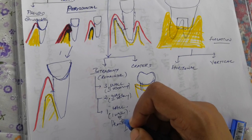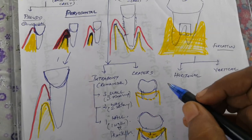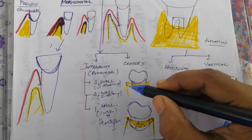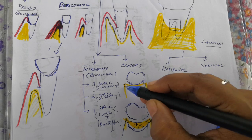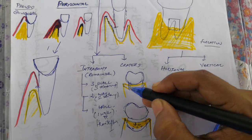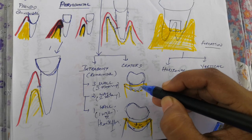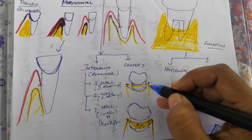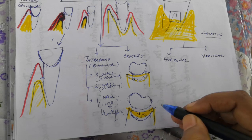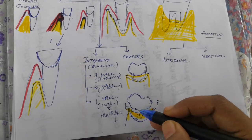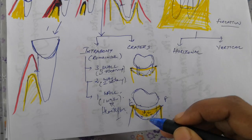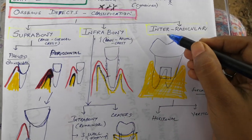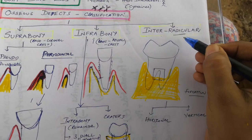For one-wall defects, resective surgery is preferred over regenerative surgery. Craters are cup-like defects where the interdental bone is lost but the facial and lingual walls remain intact, producing a cup-like shape. This is also classified under infra-bony pockets.